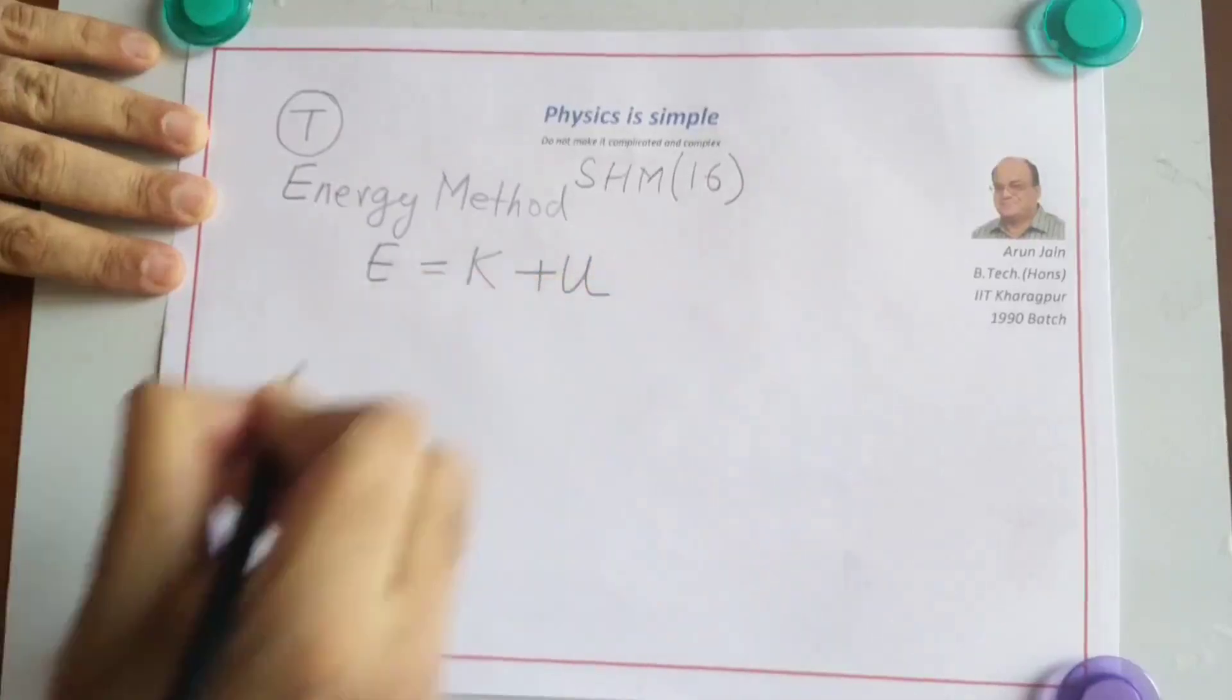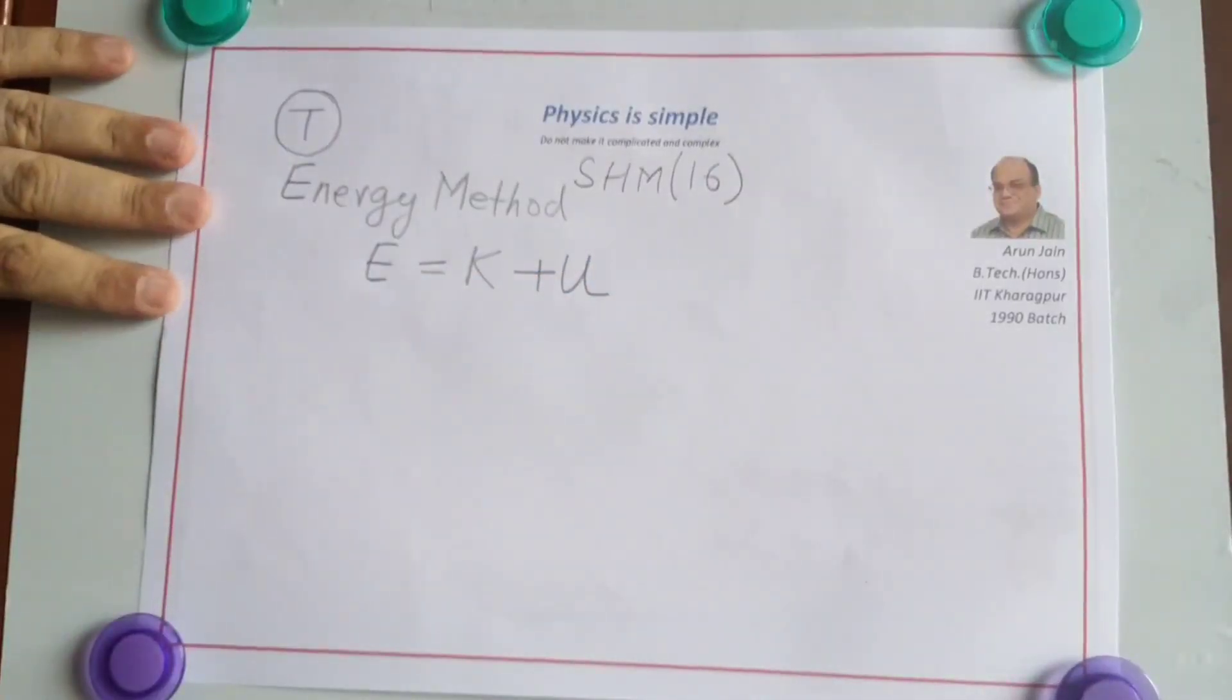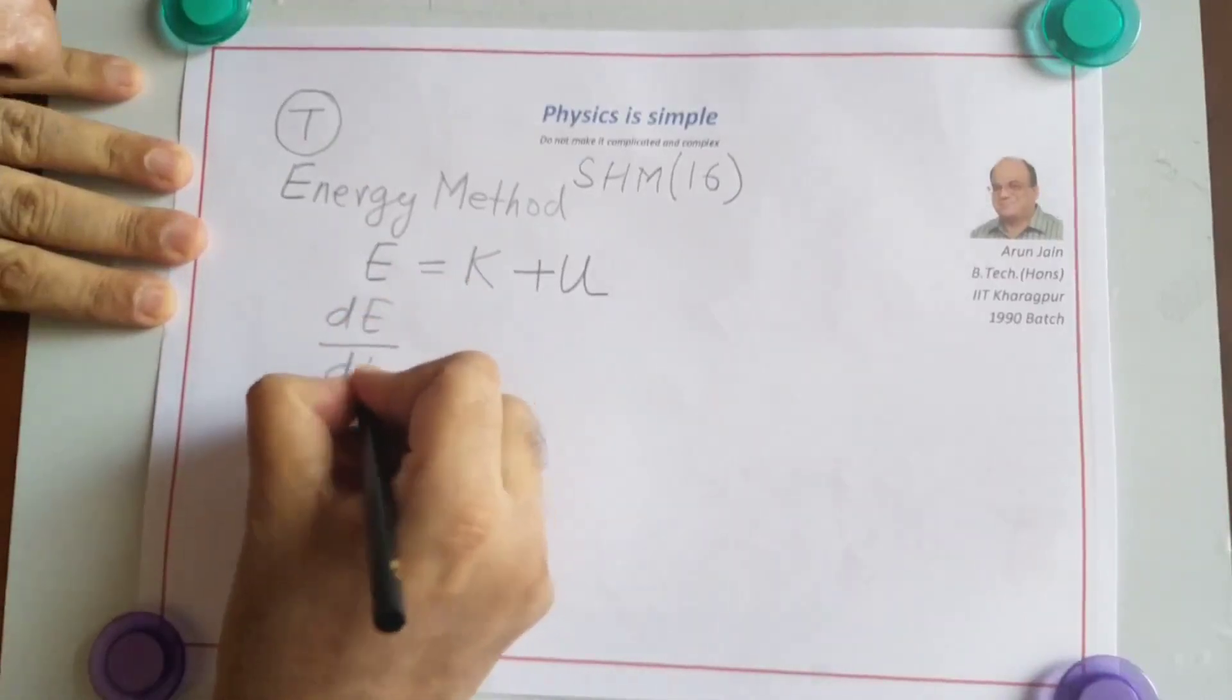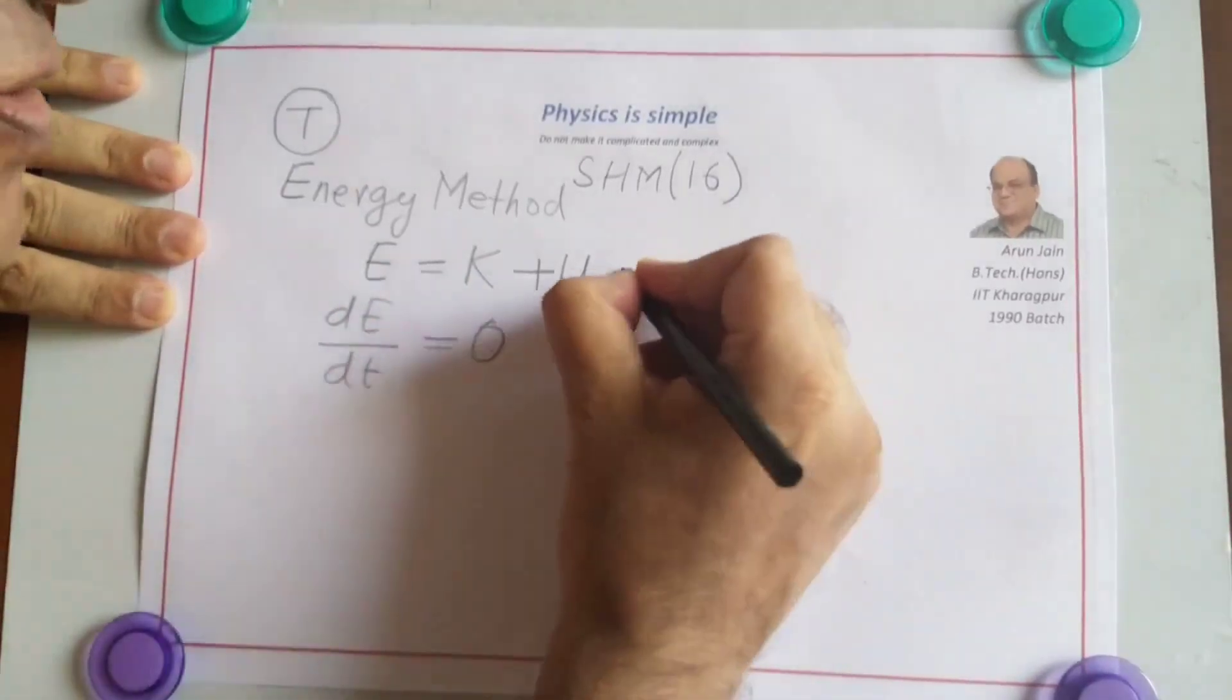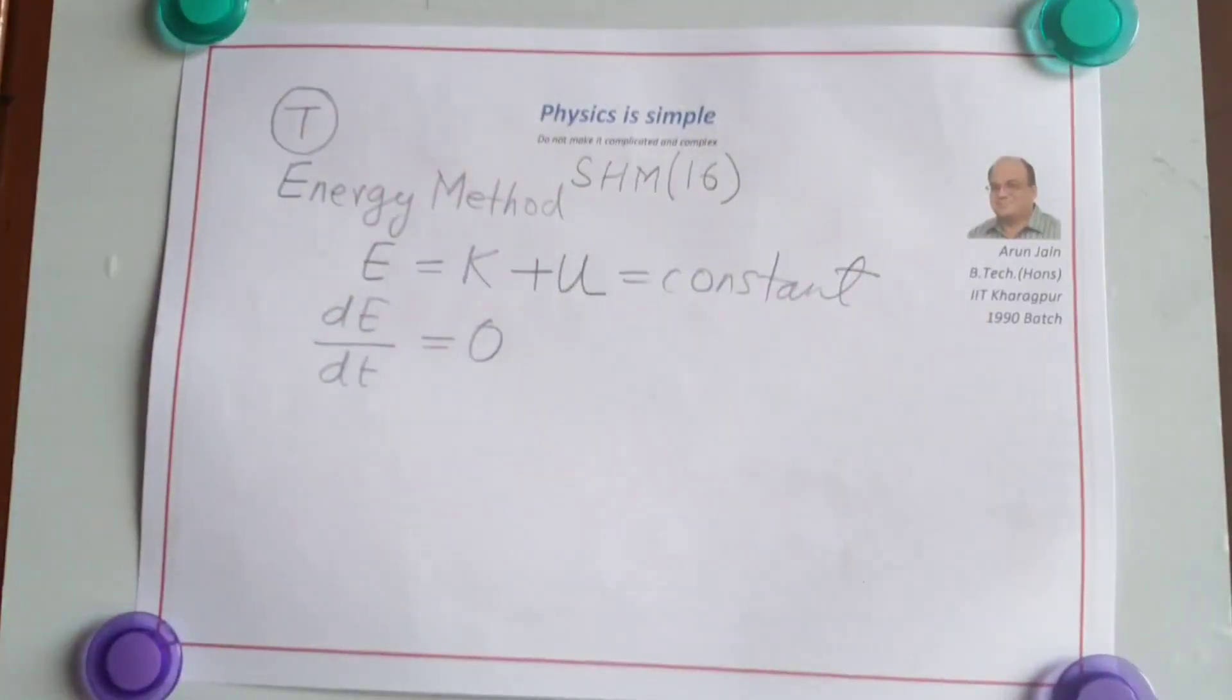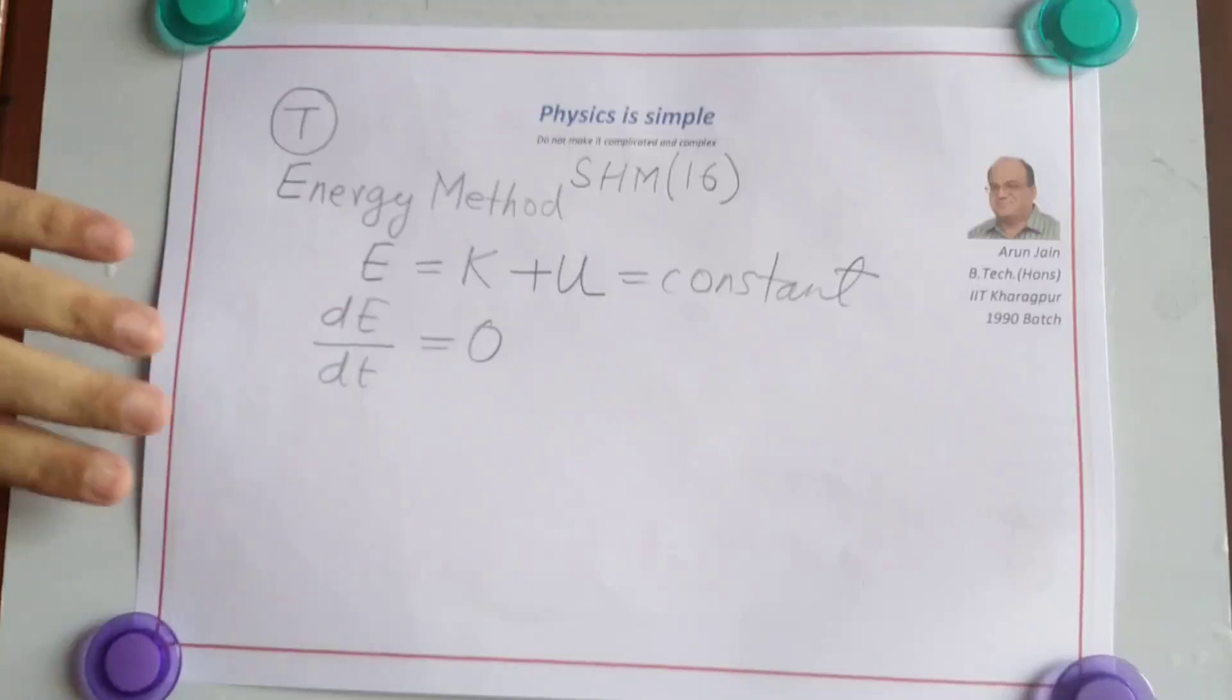Total energy in SHM is constant. So this equation we differentiate with respect to time, and that will be equal to zero because total energy in SHM remains constant. Then we do some substitution.